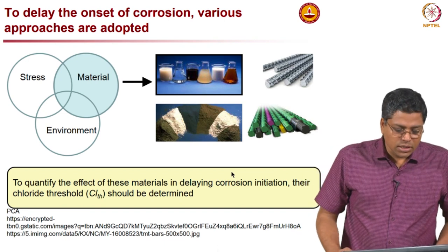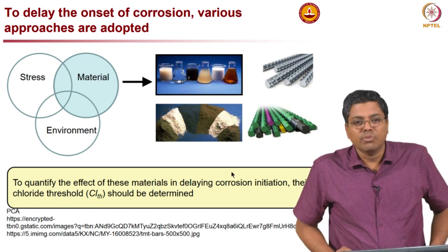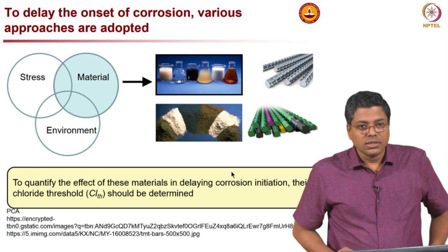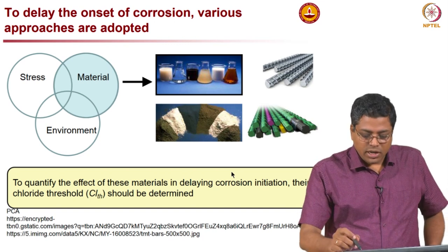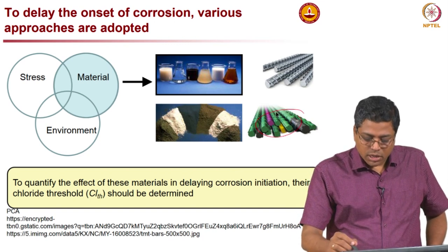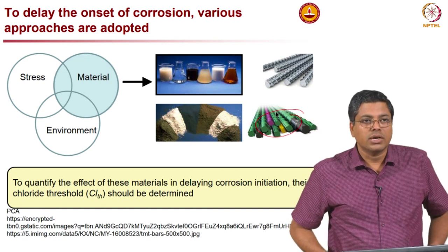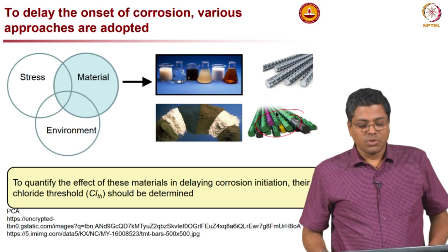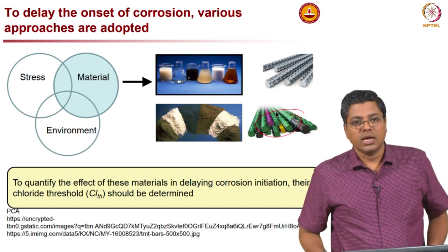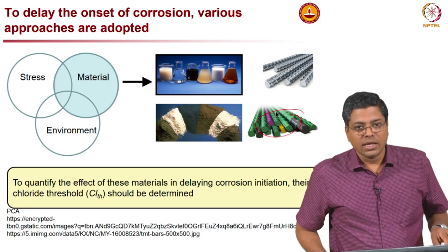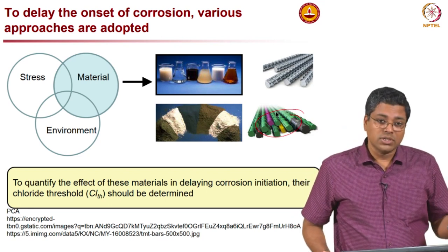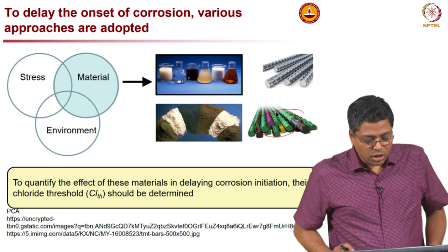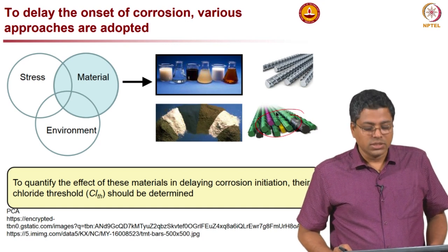In today's market we use different types of chemical inhibitors, corrosion inhibitors, supplementary cementitious materials, and different types of steels and coated rebars — all used as measures for enhancing service life. However, before using these materials at large scale, we must test how they affect the diffusion coefficient and chloride threshold. In this part we will focus mainly on the chloride threshold of these different steel cementitious systems.